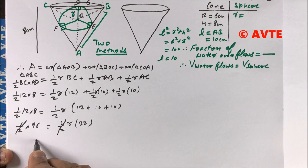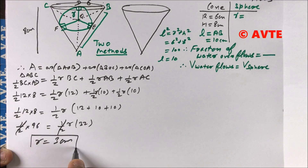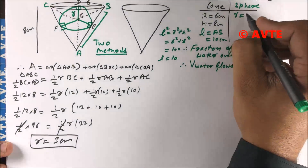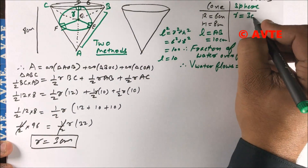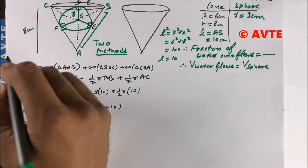That is half × 96. The halves cancel, giving R = 3 centimeters. This is your first method, in which we use the tangent property. Your radius is three centimeters.